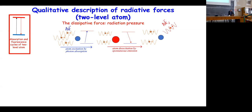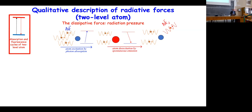Let's start with a qualitative description of radiative forces. I will start with the simplest possible system: a two-level system with a ground state and an excited state, where a laser is tuned to excite the transition between the ground and excited states. The atom can absorb light to go from ground to excited state, and then re-emit light by spontaneous emission.